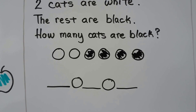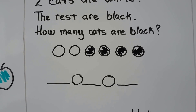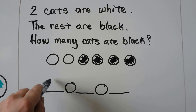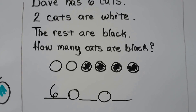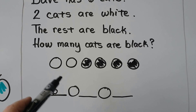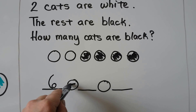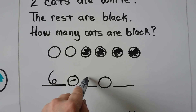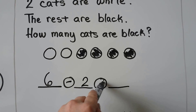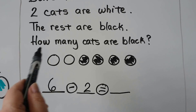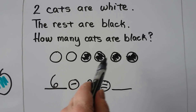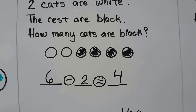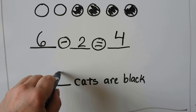We can write a subtraction sentence. There are six cats in all — that's what goes here. Six minus the two white cats is equal to how many cats are black? One, two, three, four. Four cats are black.